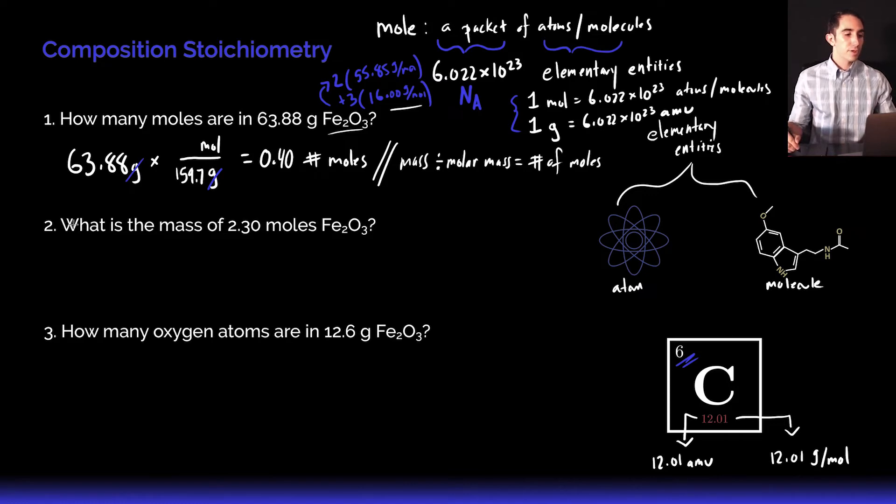Similarly, if we go to question two, what is the mass of 2.30 moles of iron oxide? We're doing the exact opposite. We're going to start with 2.30 moles. What we're looking to get to is grams. I'm going to cancel out that mole term and give me grams. That is the molar mass: 159.7 grams. I'm going to cancel out moles and end up with an answer equal to about 367 grams.